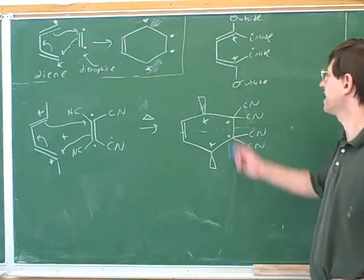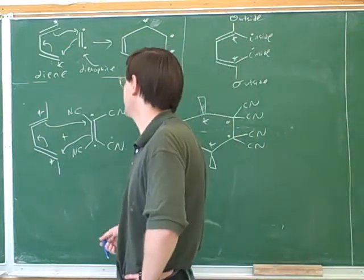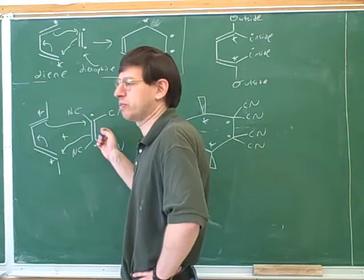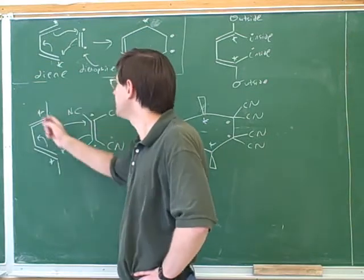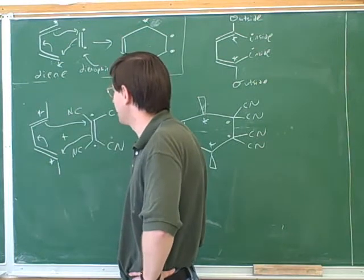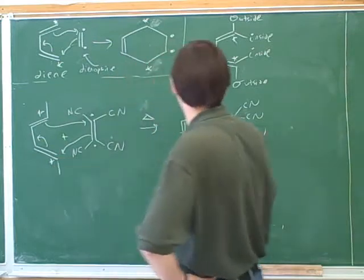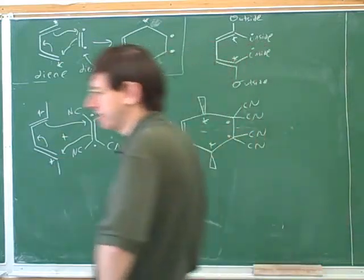So the big new thing we saw here was this idea of outside and inside. When you're comparing substituents on the dienophile, you can use the normal ideas of cis and trans. But when you're comparing substituents on the diene, you have to use the ideas of outside and inside. But we still kind of have retention of configuration. If two substituents both start outside, they should end up pointing in similar directions in the product.